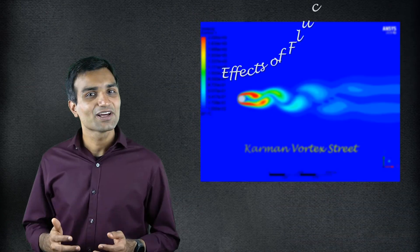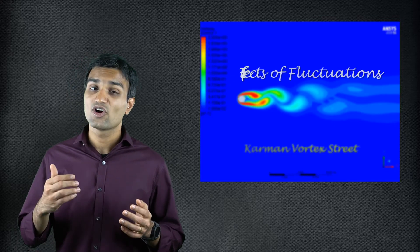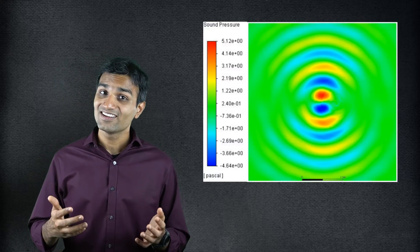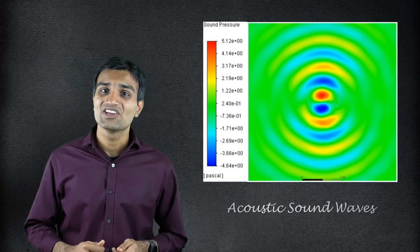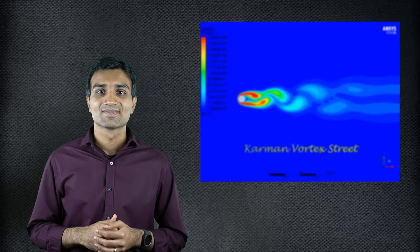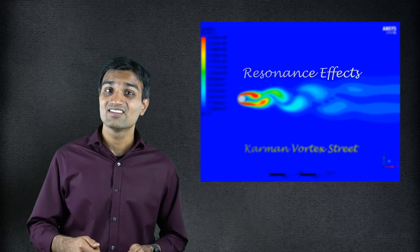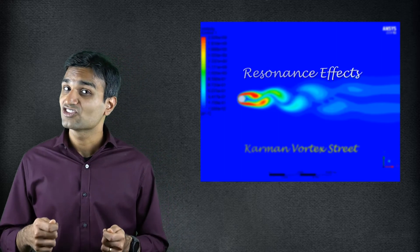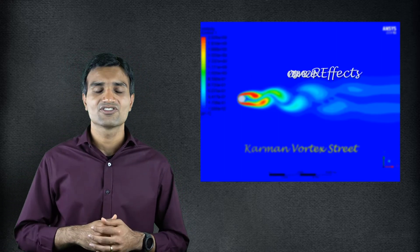The periodic fluctuations lead to two important effects on the surface of the body. For starters, if the flow field is compressible, these fluctuations can generate acoustic sound waves. Secondly, if the frequency of these fluctuations coincides with the natural frequency of the structure, we see resonant effects on such structures.